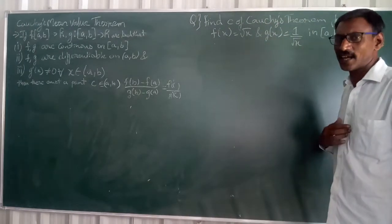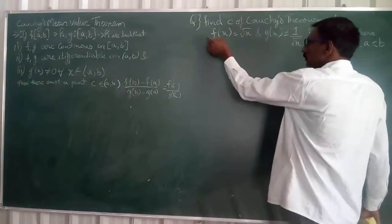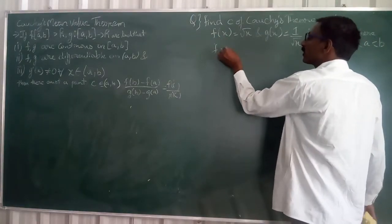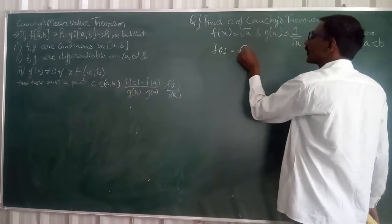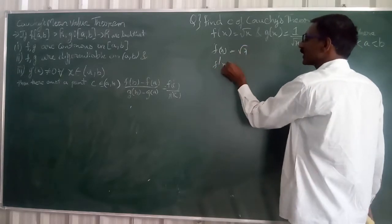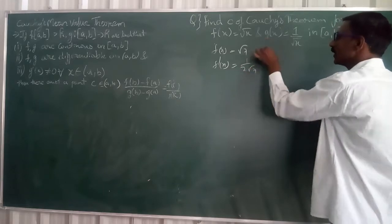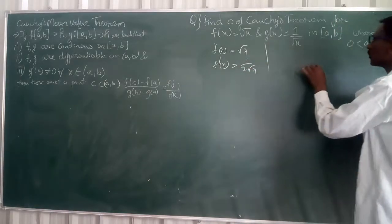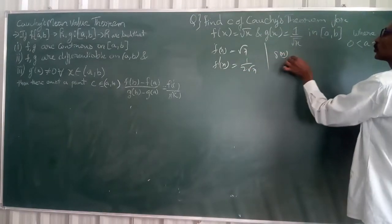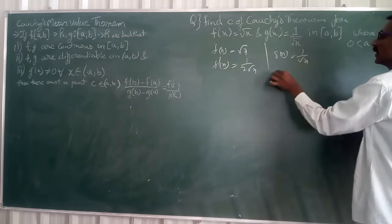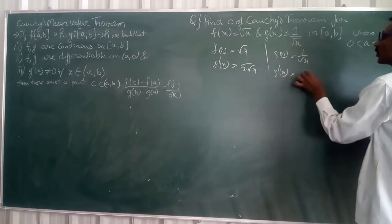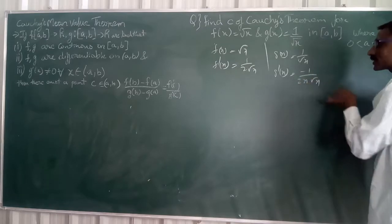So f(x) I would like to take is equal to √x. By taking f'(x), the derivative of this one, is 1/(2√x). And also, g(x) is equal to 1/√x. g'(x) is equal to -1/(2x√x). I would like to explain the errors.